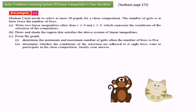Madam Carol needs to select at most 20 pupils for a choir competition. The number of girls is at least twice the number of boys. Write two linear inequalities, other than x greater or equal to zero and y greater or equal to zero, which represent the conditions of the selection of the competitors.